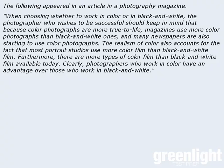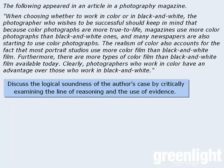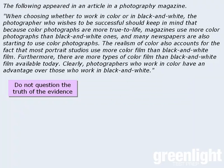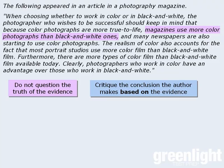Now, as we look for flaws, please note that according to the GRE test makers, our task is to discuss the logical soundness of the author's case by critically examining the line of reasoning and the use of evidence. In other words, we're looking for points that determine whether or not the author's conclusion follows from the given premises. So when we look for flaws, we must not question the truth of the evidence. For example, in this argument, we cannot question the fact that magazines use more color photographs than black and white photographs. We must assume that this information is true and look for problems with the conclusion the author makes based on this information.